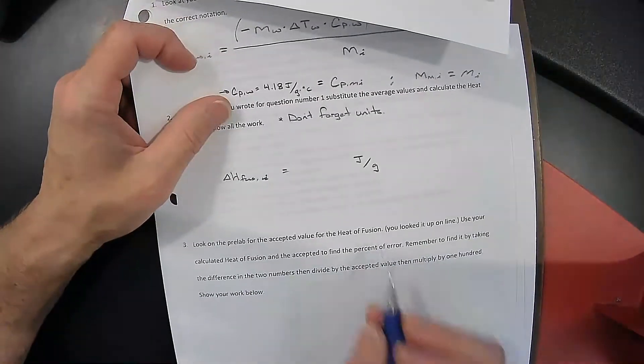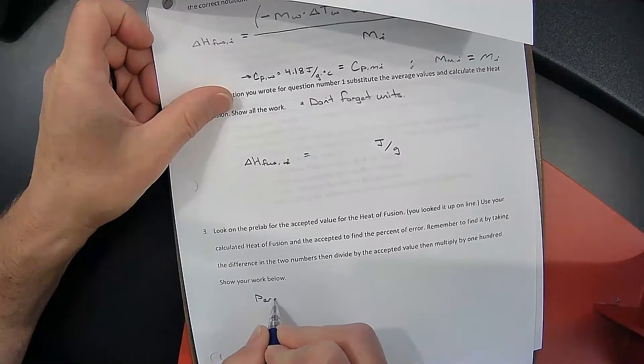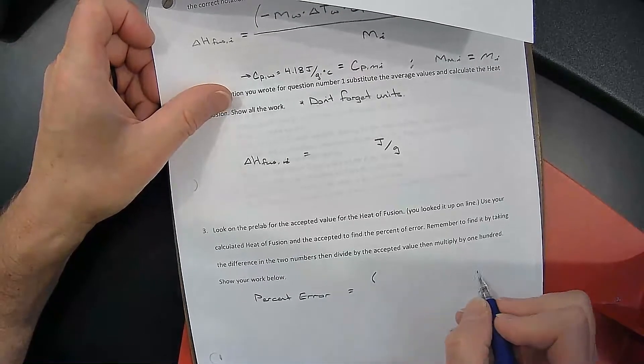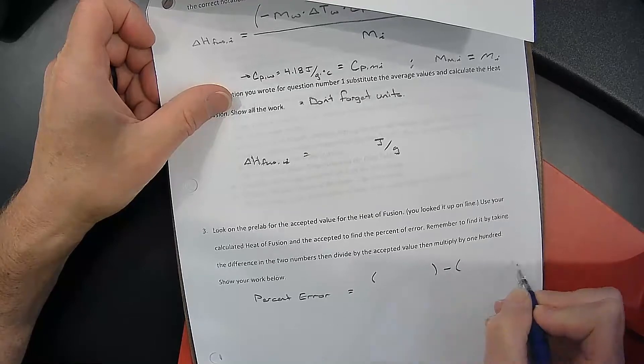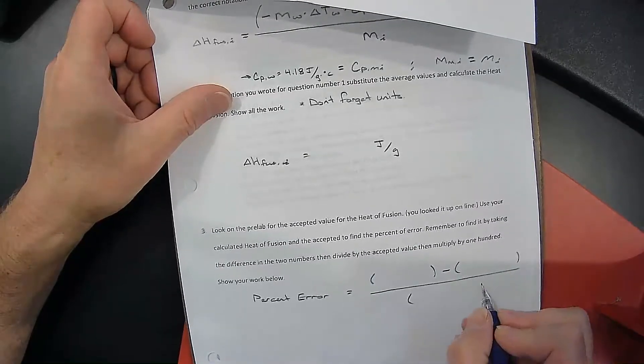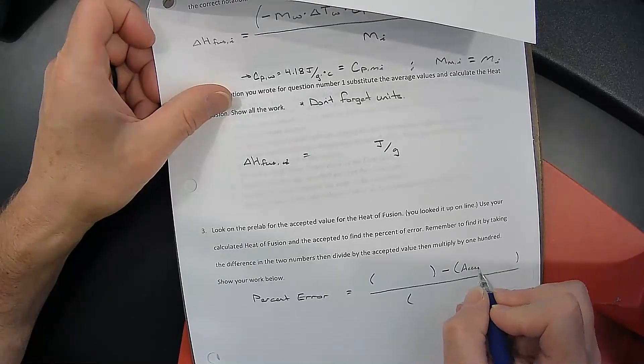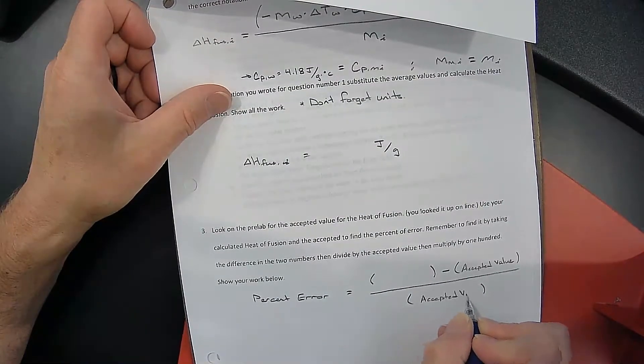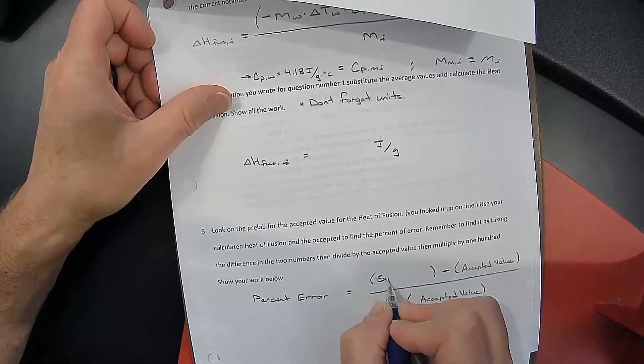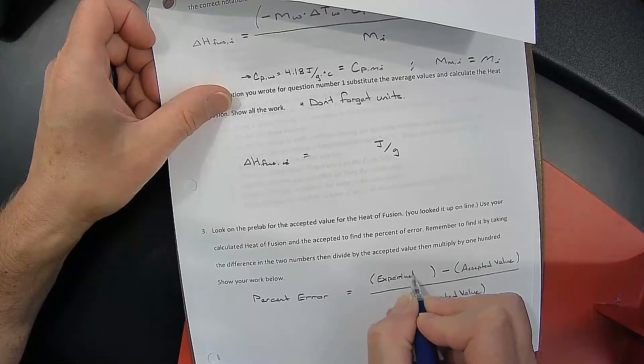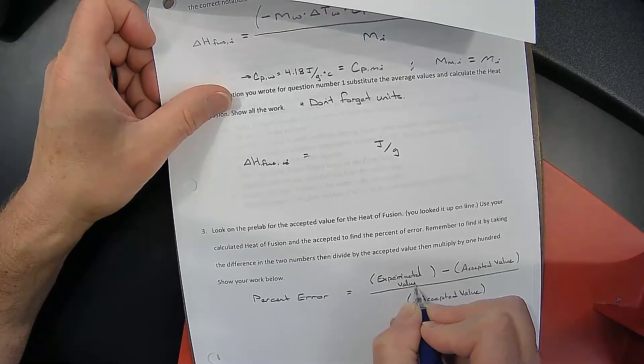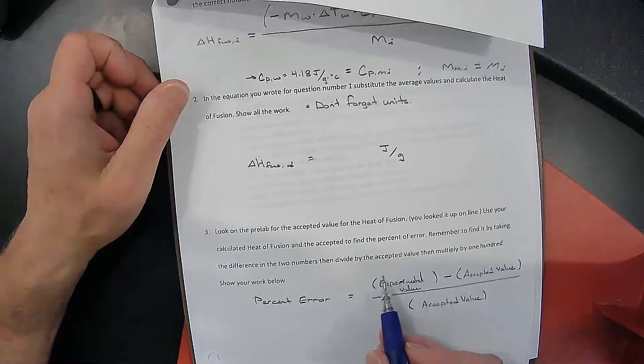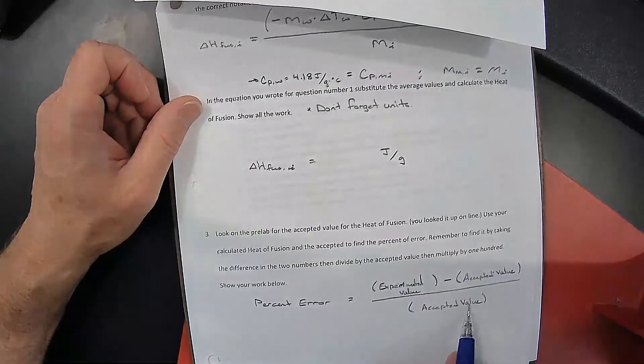Then, finally, to find your percent error, you will take your accepted value and then your experimental value. So this is what you got in your experiment here. And what's the accepted value? Well, the accepted value is the real value, 334 joules per gram.